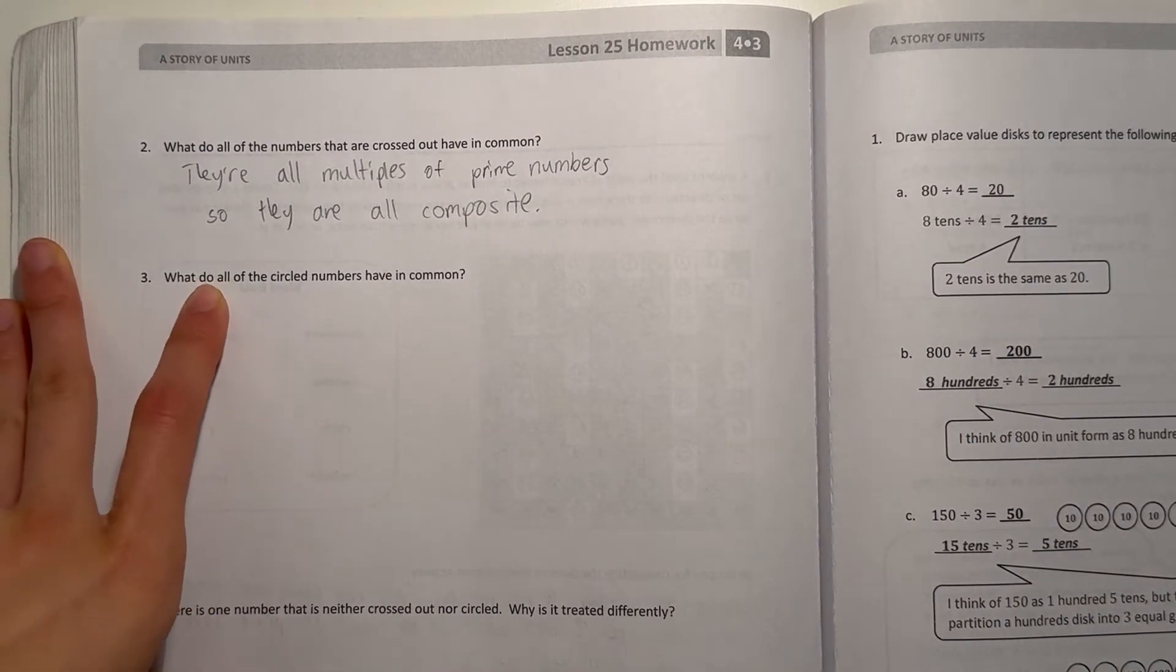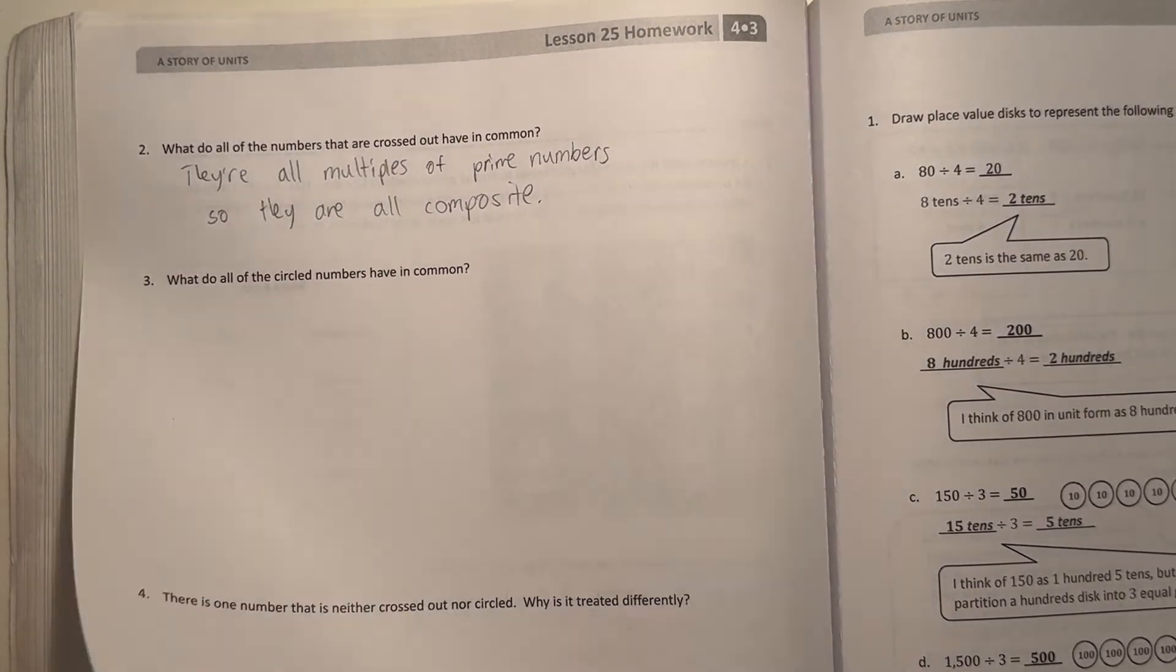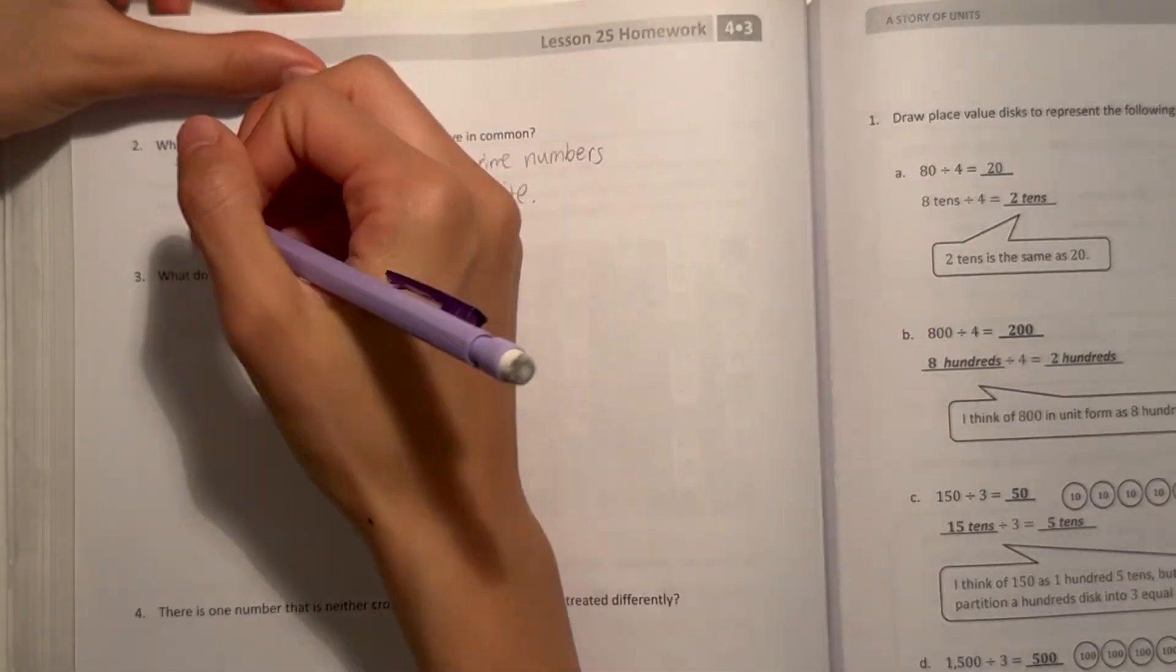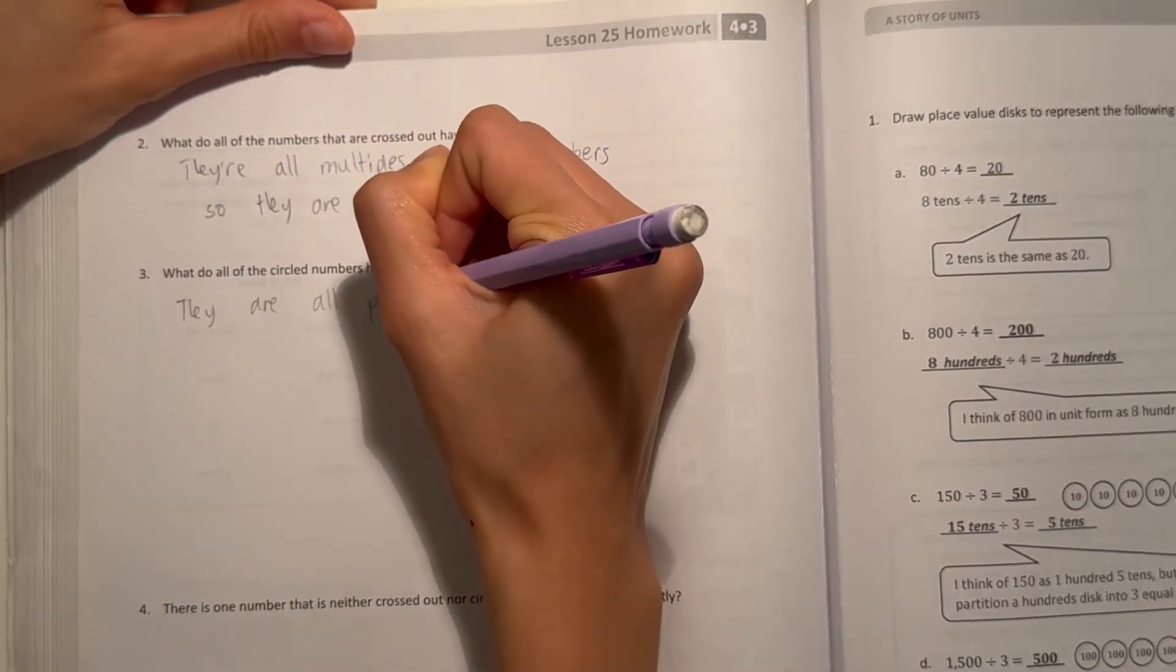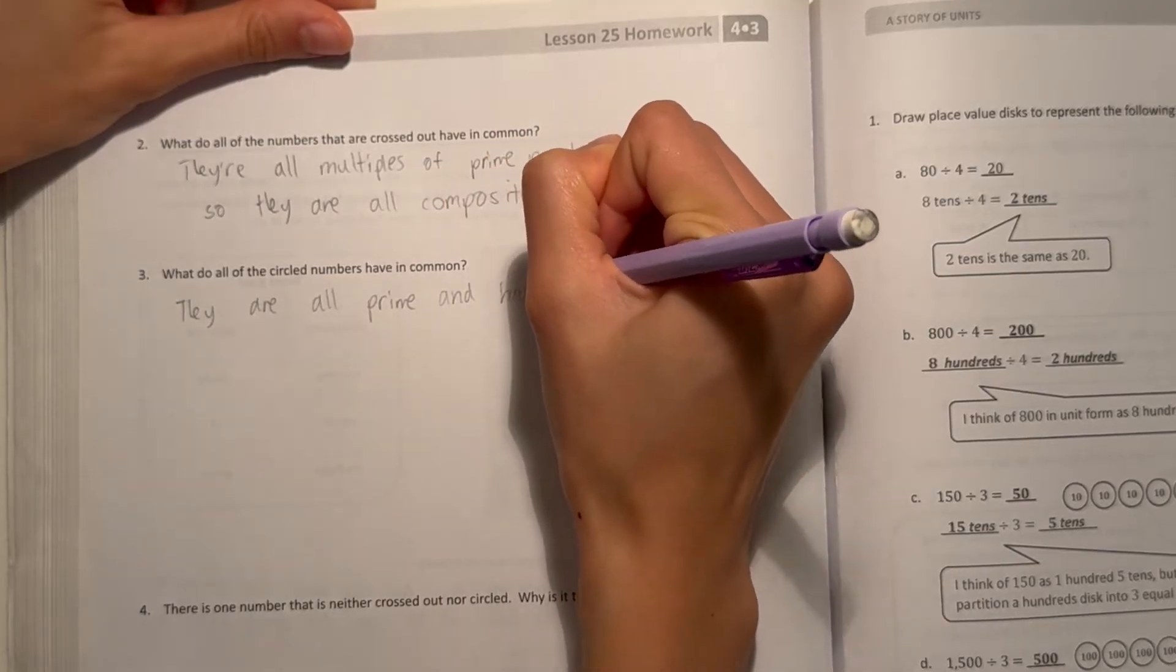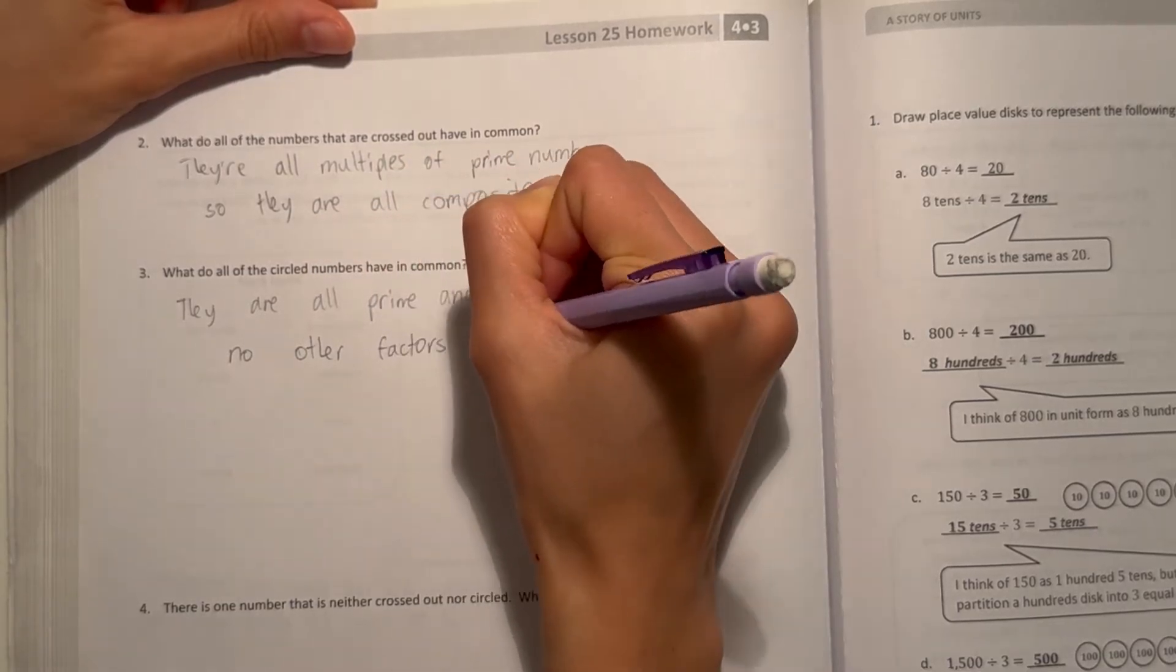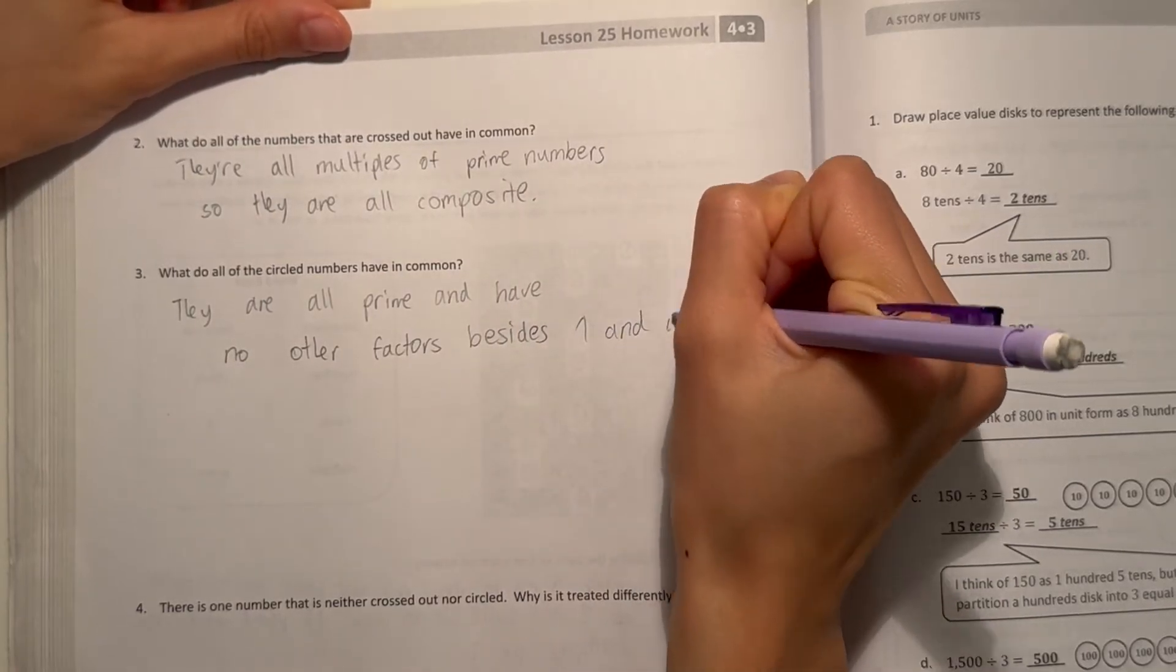Alright, number three says, what do all the circle numbers have in common? So all the circle numbers, they are prime numbers. So, meaning they have no other factors. So they are all prime and have no other factors besides one and itself.